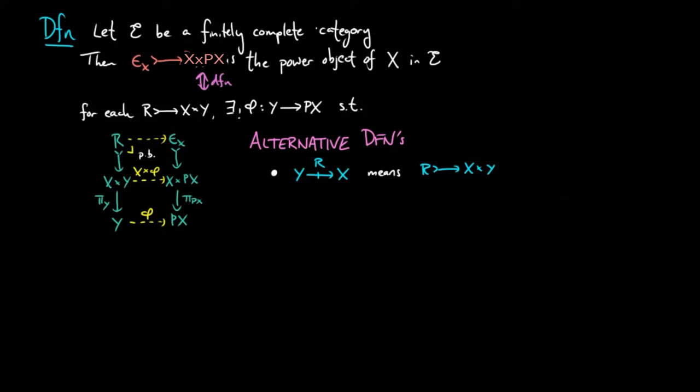So we may say an object PX is a power object of X if and only if there is a one-to-one correspondence between relations from Y to X and morphisms from Y to PX natural in Y.